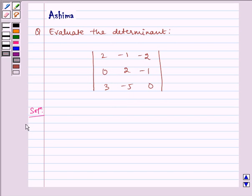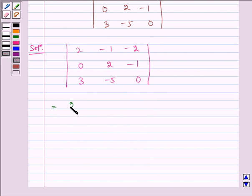Now let us write the solution. We have 2, -1, -2; 0, 2, -1; 3, -5, 0. Now solving this, we get which is equal to 2 into (2 into 0 minus (-1) into (-5))